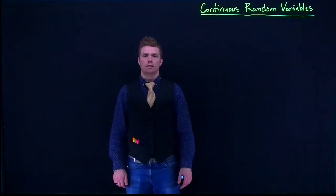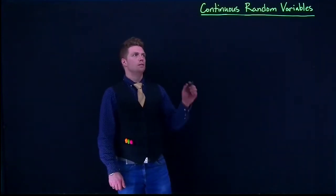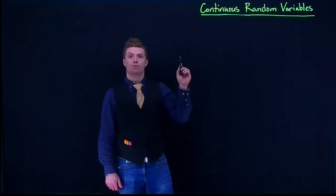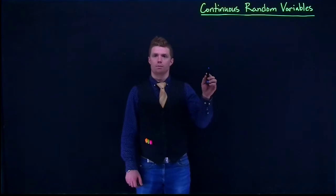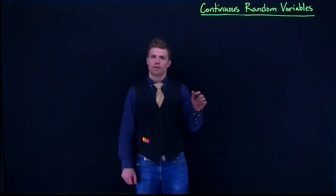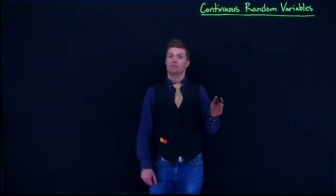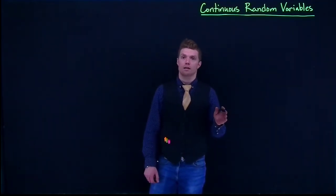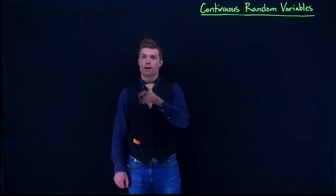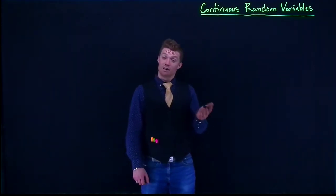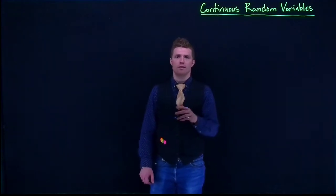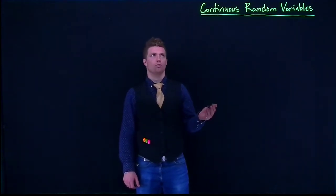In this section we are going to be talking about continuous random variables, and to start off we're going to do a little bit of comparison and contrasting with specifically discrete random variables — how they're kind of similar and also how they deviate and have some of their own rules.